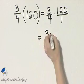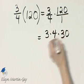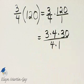That's three times—I'll write 120 as 4 times 30, just so we can see that common factor of 4 that is in 120.